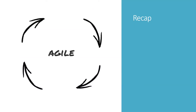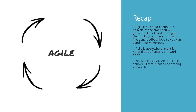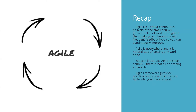Quickly recapping what we've learned about Agile: Agile is all about continuous delivery of small chunks of work throughout small cycles with frequent feedback loops so you can continuously improve. Agile is everywhere and is a natural way of getting any work done. You can introduce Agile in small chunks — it's not an all-or-nothing approach because you can become Agile by doing Agile. Agile frameworks give you practical steps for introducing Agile into your life or work, and Scrum and Kanban are the most common Agile frameworks.